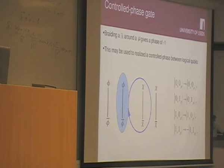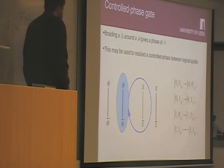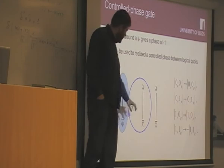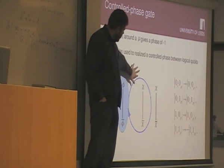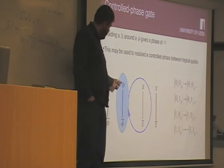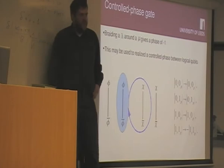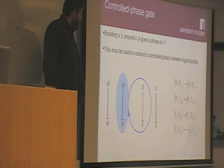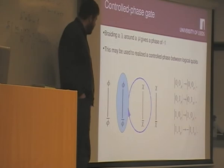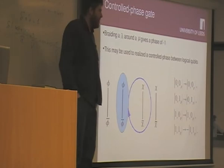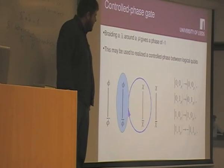For the braiding of these particles, if we braid a lambda around a mu, what we get is a phase of minus one. If we have a qubit stored in these phi phi-bar pairs, and another one stored in these chi chi-bar pairs, and then we take this whole pair and braid it around that pair. Well, if they're both in the state zero, then these two fuse to the vacuum, these two fuse to the vacuum, so when we're doing this braiding, we're just taking the vacuum around the vacuum, which does nothing. If we're in the state zero one or one zero, we're either taking the vacuum around something or something around the vacuum, which also does nothing. So the only time when something happens is when we're in state one one, where these two would fuse to a lambda, these would fuse to a mu, so this braiding is braiding a lambda around a mu, we get a phase of minus one. So we can see that we get the controlled phase gate on these logical qubits by braiding.